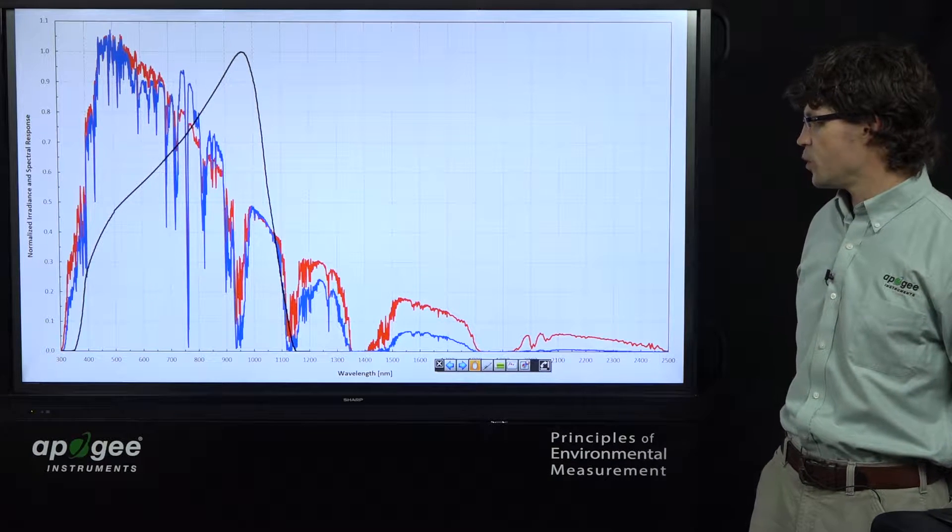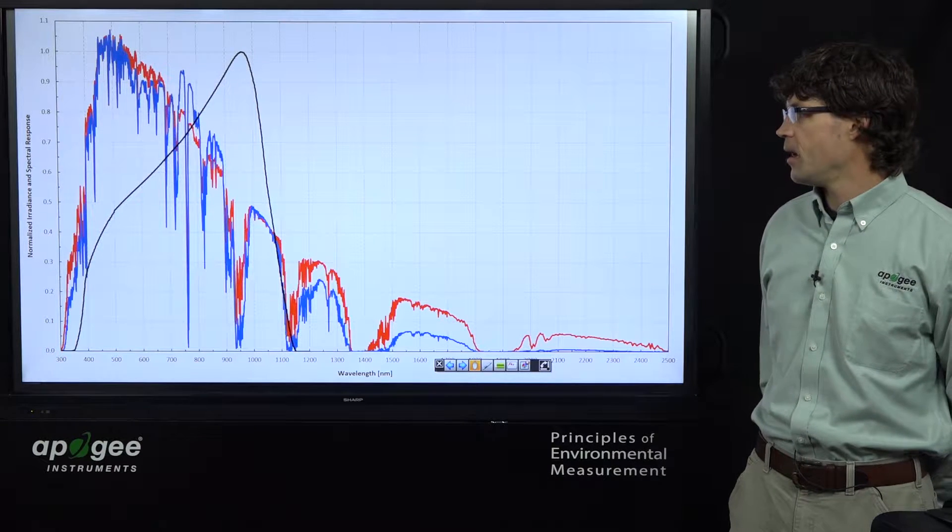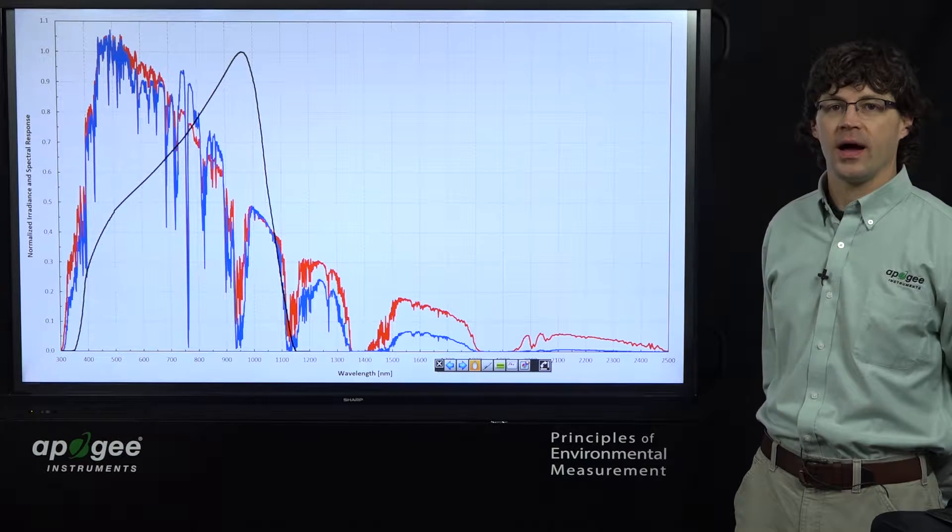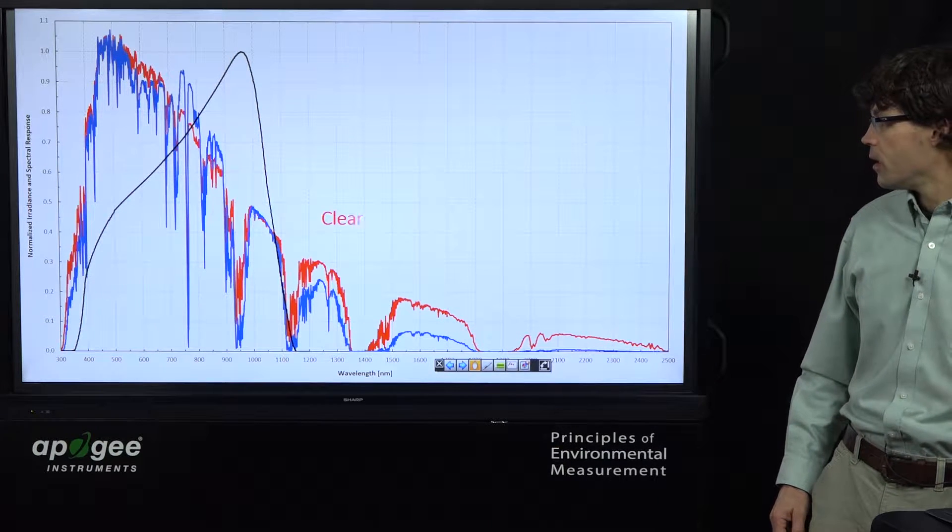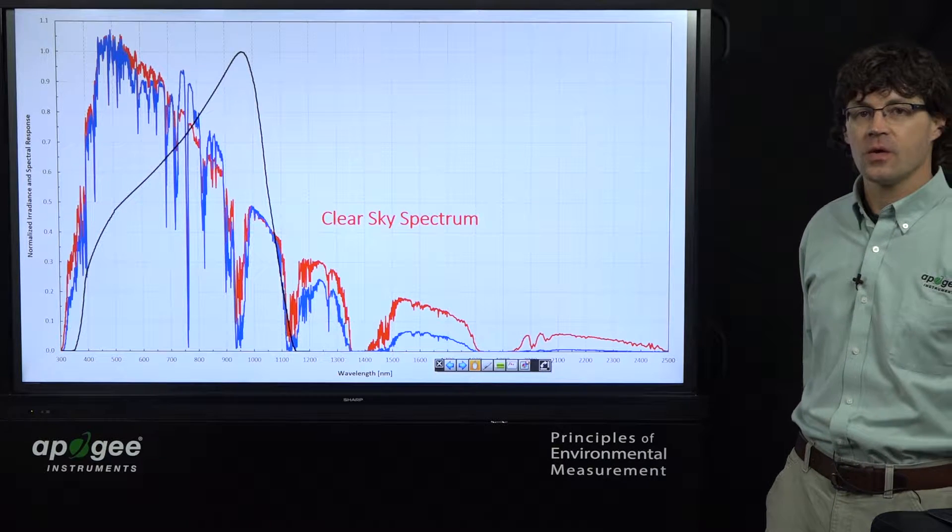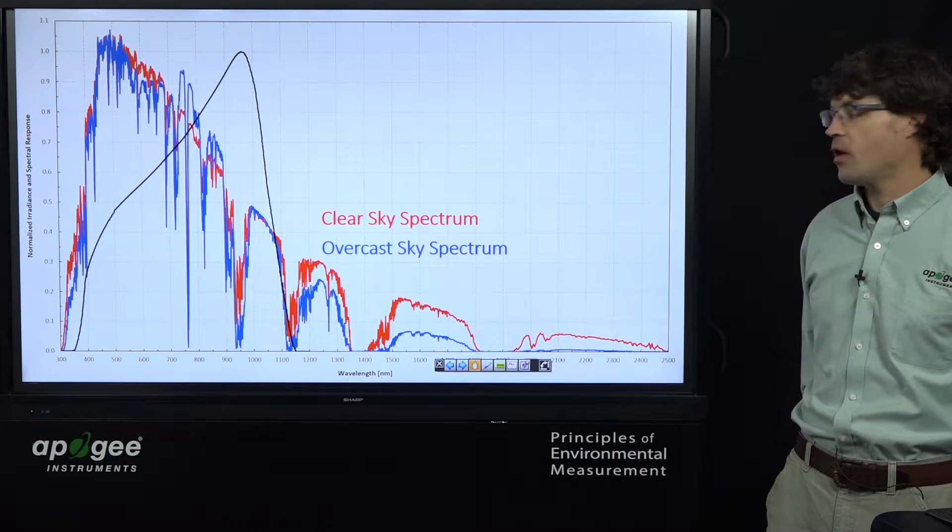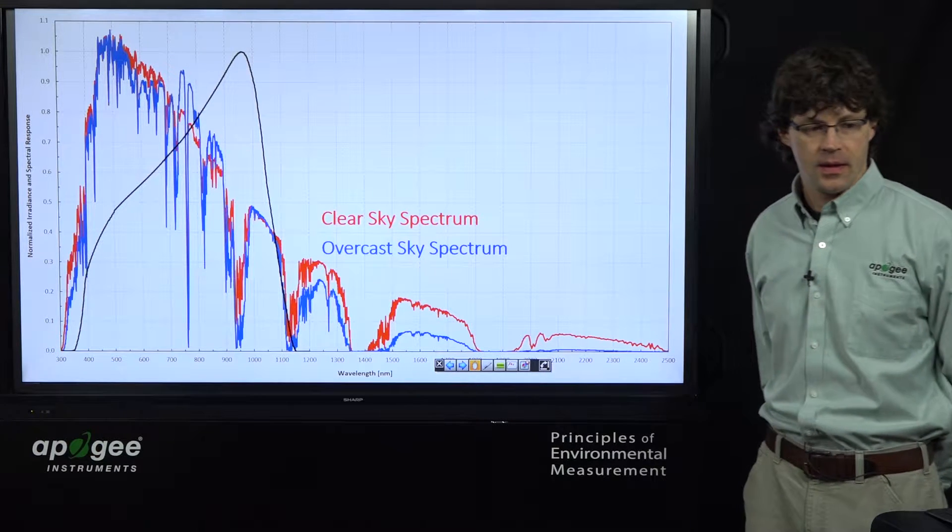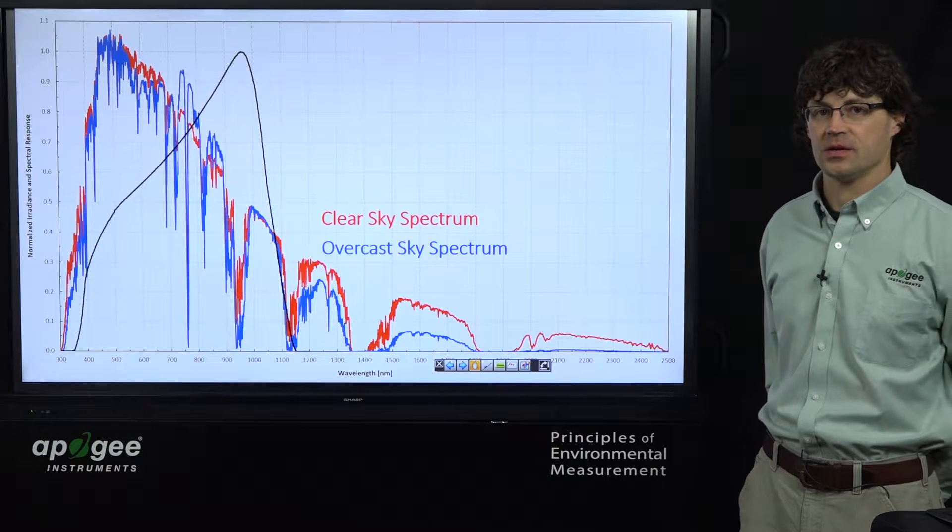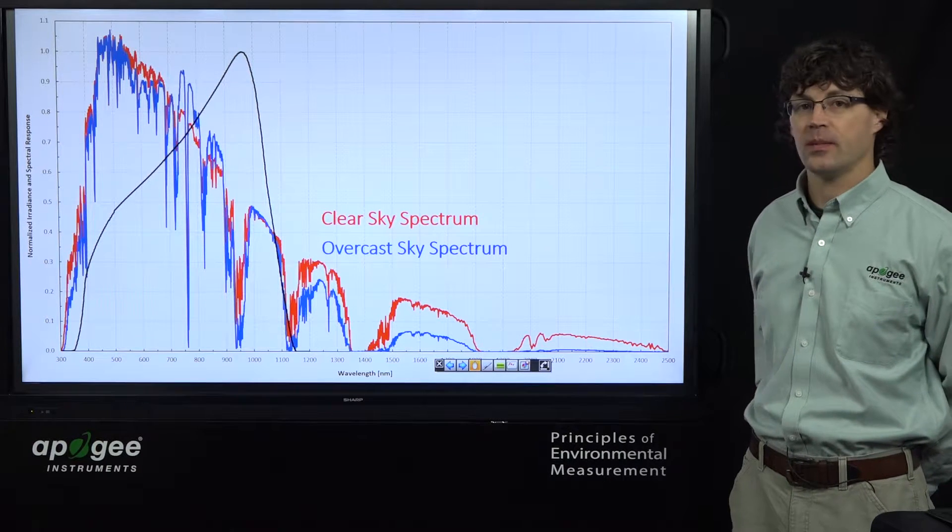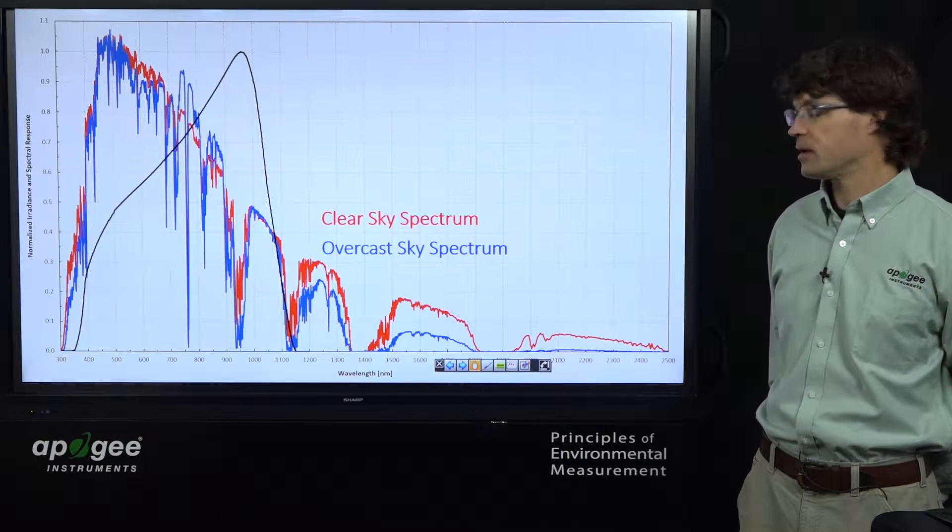On the x-axis is wavelength from about 300 to 2500 nanometers, and on the y-axis is either normalized irradiance or spectral response. The red data set is a clear sky solar spectrum. The blue data set is an overcast sky solar spectrum. Both of these data sets are normalized at 500 nanometers, so you can see the shape comparison, how the spectrum changes from overcast skies and clear skies.